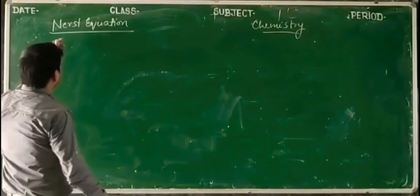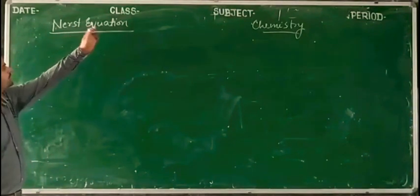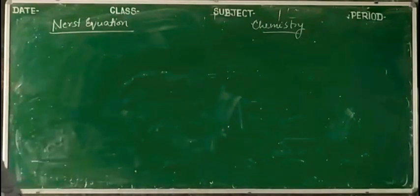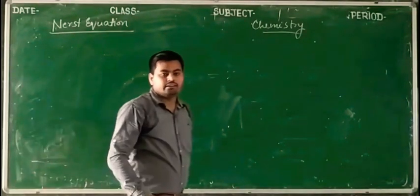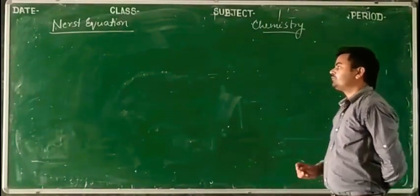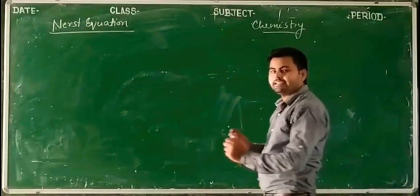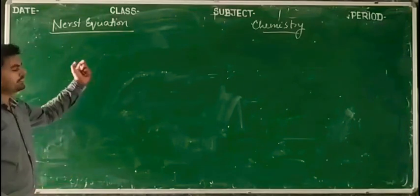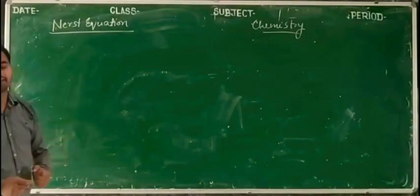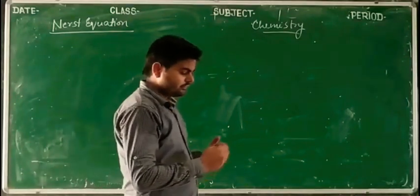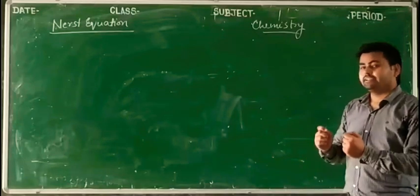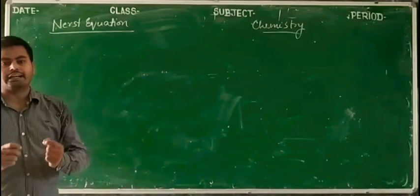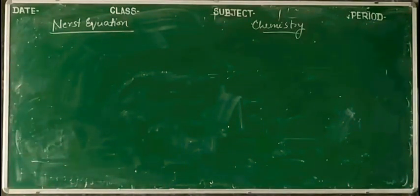Hello dear listeners, I am Dr. Vishnu. Today we will discuss the Nernst equation. This is the next topic of the AL2 MSC chapter. The Nernst equation is used to calculate the EMF of any cell, and it is also used to calculate the electrode potential of any half cell.